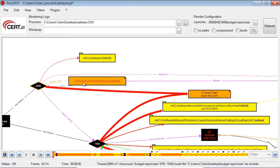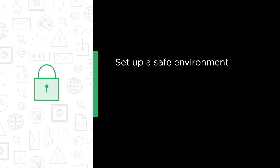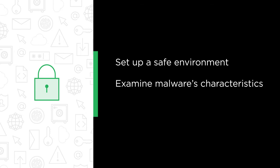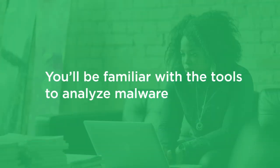In this course we're going to learn how to safely analyze malware so we can figure out what it does. Some of the major topics that we'll cover include how to set up a safe environment to analyze malware in, what clues can be obtained from examining the malware's characteristics, and how to watch the malware's behavior to see what it does when it runs. By the end of this course you'll know the common tools and techniques that are used by incident responders everywhere to analyze malware.